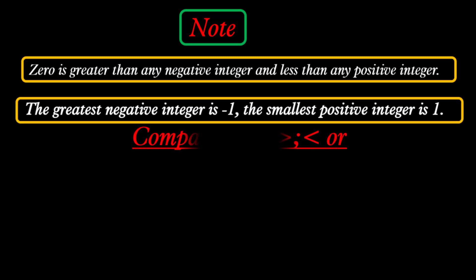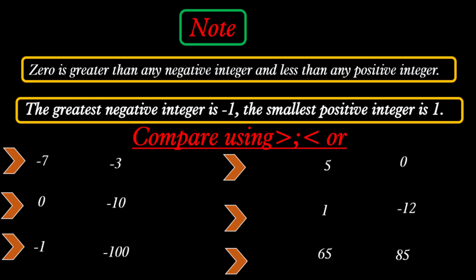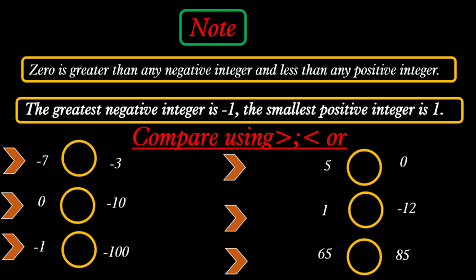Now let's compare using greater than or less than. First: negative 7 and negative 3 — negative 7 is less than negative 3, because negative 7 is to the left of negative 3 on the number line. Next: 0 is greater than any negative integer, so 0 is greater than negative 10. Negative 1 is the greatest negative integer, so negative 1 is greater than negative 100.